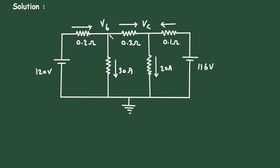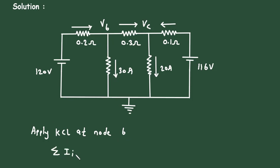Now let's apply KCL — that is Kirchhoff's Current Law — at node B. According to KCL, the summation of all the currents entering a node is equal to the summation of all the currents leaving the node. At this node, the entering current is this current — let's say this is current I1 — and this current is 30 amperes.